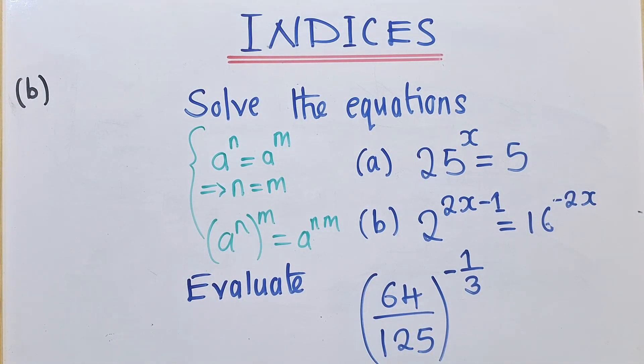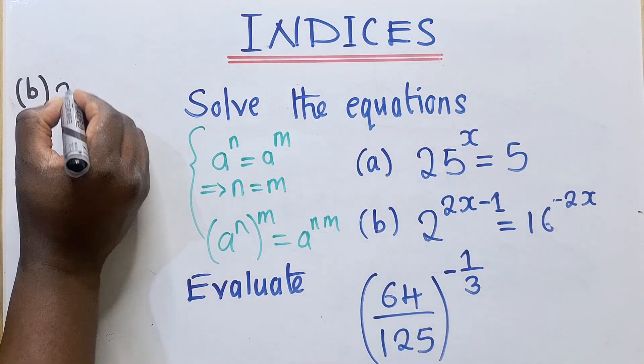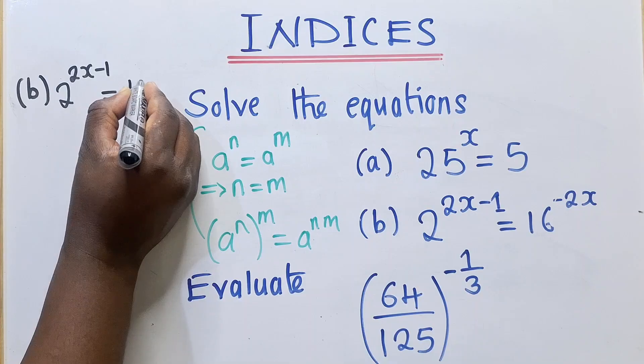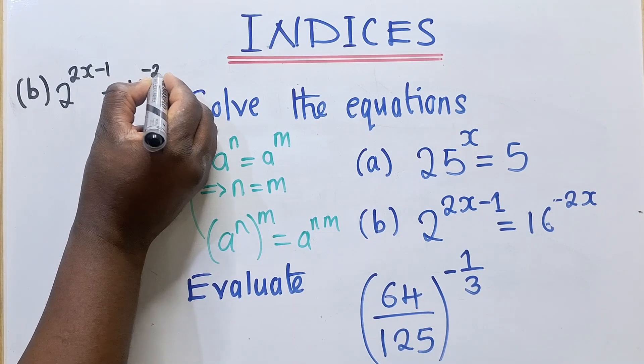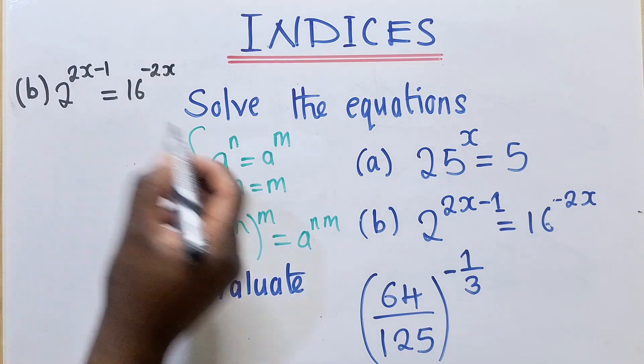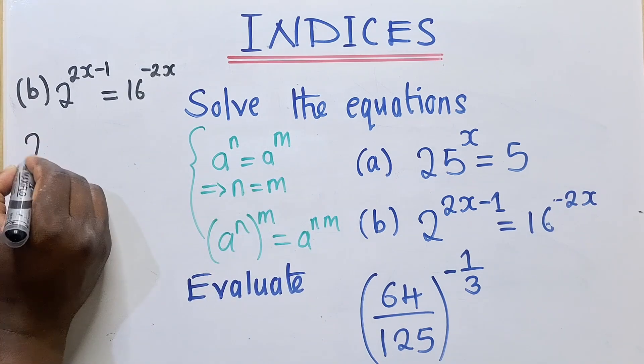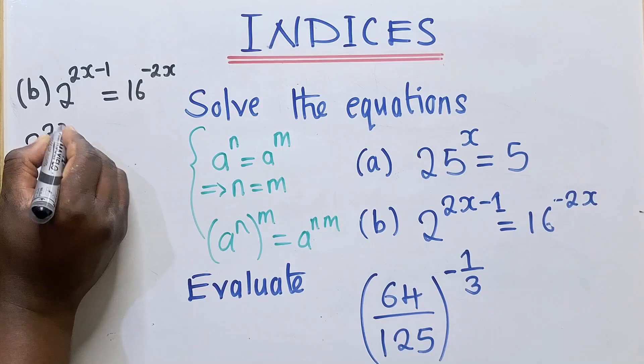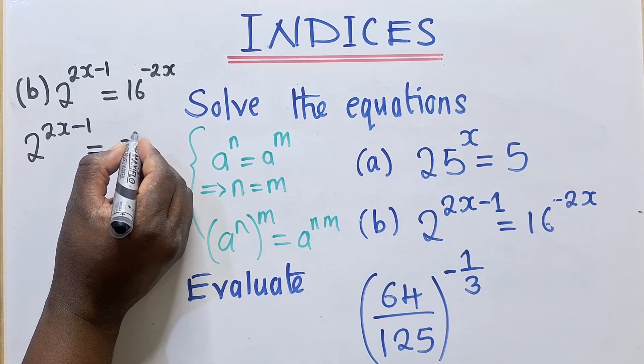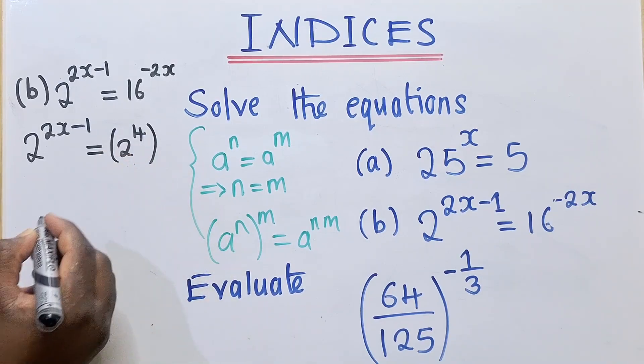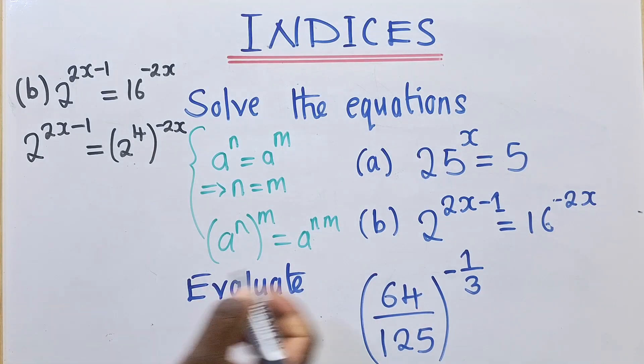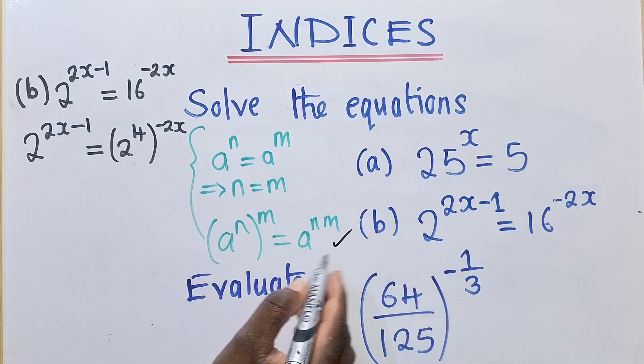Question B. We've got, of course, 2 power 2X minus 1 is equal to 16 power negative 2X. So we need to balance the bases so that we can apply this property. This will simply be 2 power 2X minus 1 is equal to 2 power 4. So 2 power 4, and then there is a power 2X here. We should not forget it. So we can now apply this property.